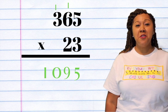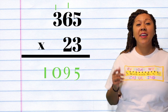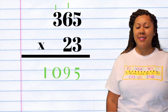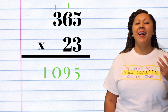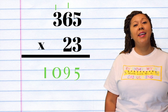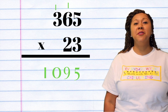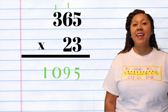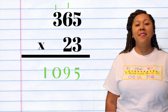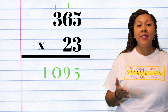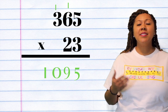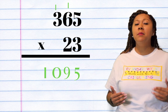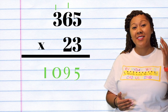What we know about place value is you're going to place your 5 in the ones place and you're going to regroup that 1 in the tens place. Then you're going to multiply 3 times 6, which is 18, plus that 1, that gives you 19. So your 9 goes in the tens place and that 1 goes in the hundreds place. And finally, 3 times 3 is 9 plus that 1 is 10. So on my first row right below my problem, I should have the number 1,095.